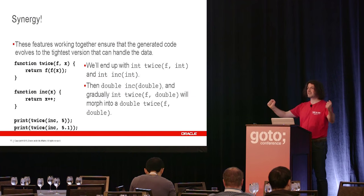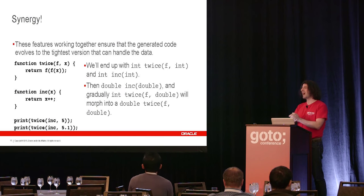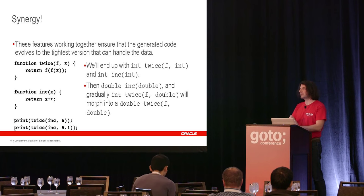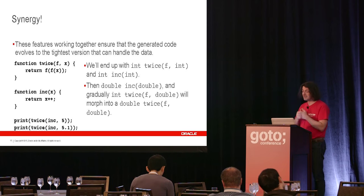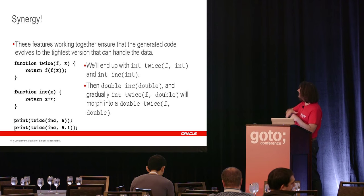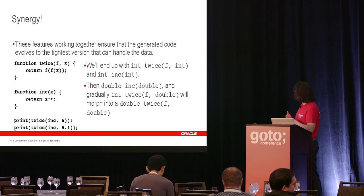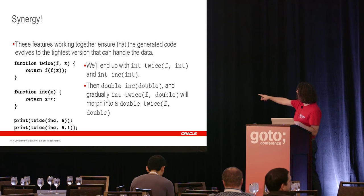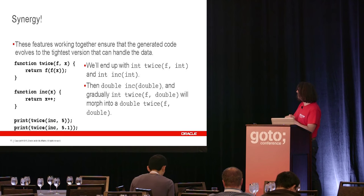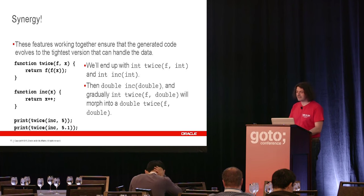Synergy — that's a great word that's been hijacked by marketing, but it really means that multiple agents are collaborating to achieve something that's more than the sum of its parts. Here's a 'twice' higher-order function — a function that takes another function and applies it twice to an operand. If we invoke 'twice' with an increment function, passing 5, what types will we end up with? And then we invoke it with 5.1 again — what do we end up with?